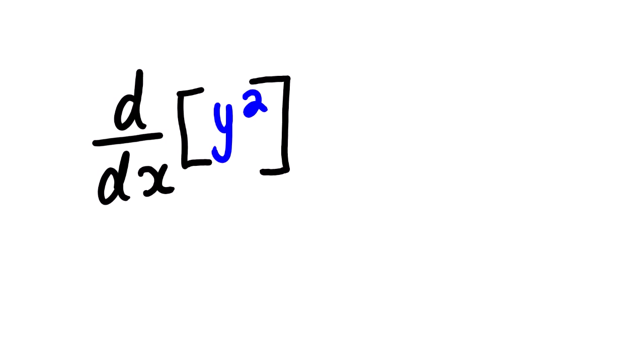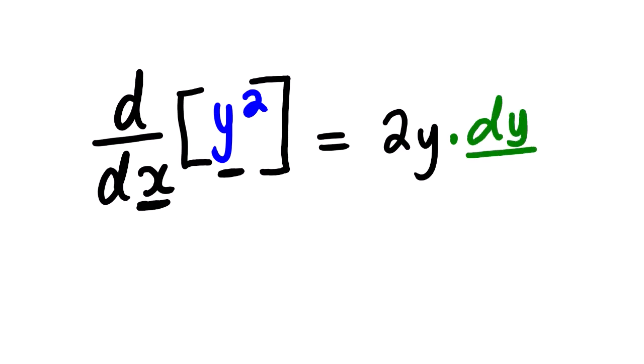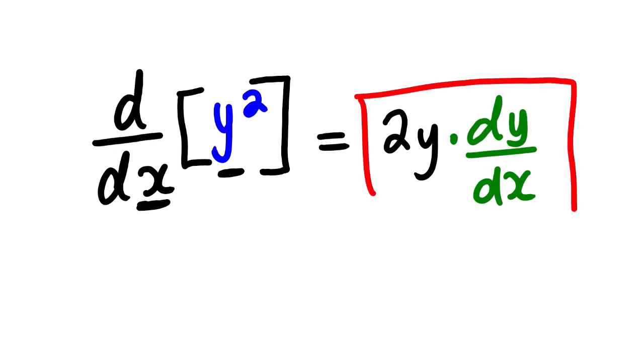We need to understand this notation. We are going to derive this function inside the bracket with respect to x. Now we know that the derivative of y squared is 2y. We need to understand that we are deriving a different variable with respect to x. So after finding the derivative of the function inside the bracket, it is important to write multiply by dy over dx. So the derivative of y squared in terms of x is 2y times dy over dx. This is part of the answer, and it is very important.